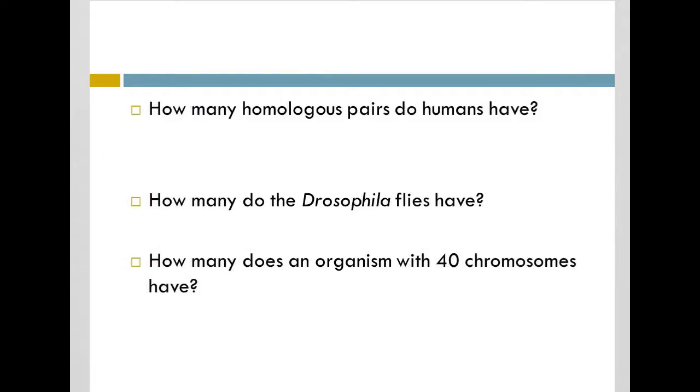So here are a couple problems you might see associated with homologous pairs. You should know that if we have 46 total chromosomes, then we have 23 homologous pairs in humans. We said Drosophila flies have 8 total chromosomes, therefore they have 4 homologous pairs. And because, again, things come in pairs, I'm just dividing the total by 2. How many does an organism with 40 chromosomes have? They would have 20 pairs.